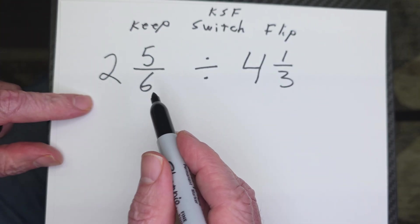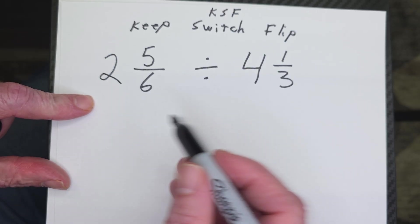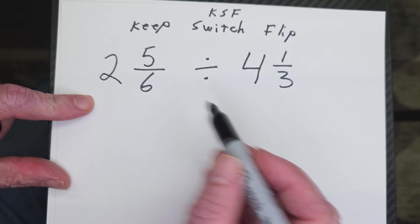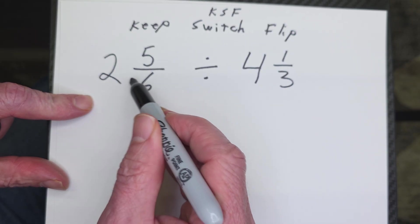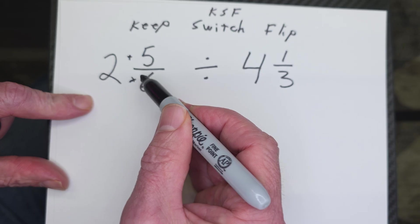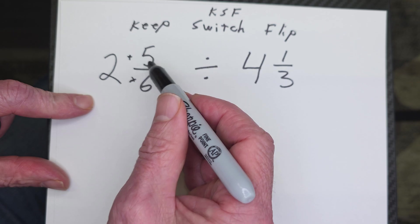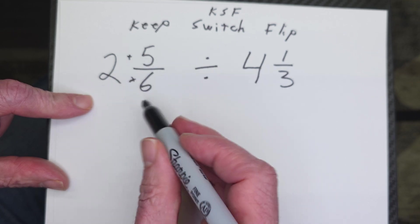But first of all, what we need to do is we need to turn these into an improper fraction. So let's go ahead and do that. Remember how you turn it into an improper fraction? We're going to multiply 6 times 2, and then we're going to add the 5. And the same thing over on this side. So 6 times 2 is 12. 12 plus 5, 17.